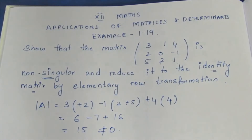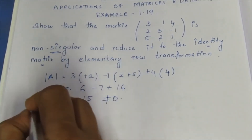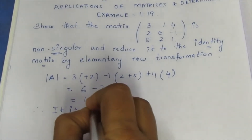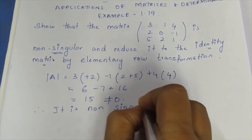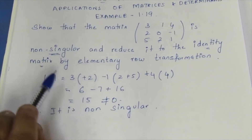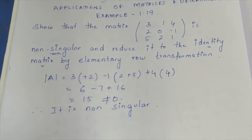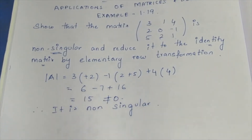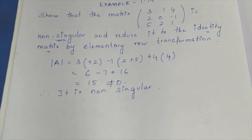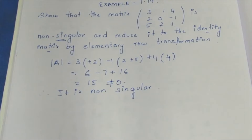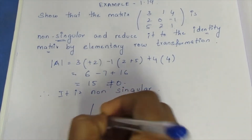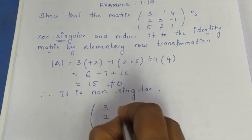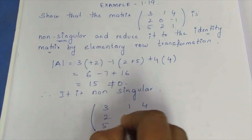So the determinant equals 15, which is not equal to 0. Therefore the determinant is not zero, and therefore it is a non-singular matrix. Since the determinant is non-zero, we can confirm this is a non-singular matrix.